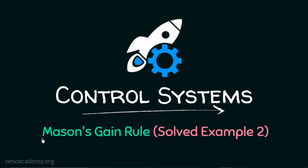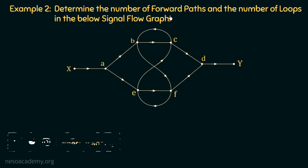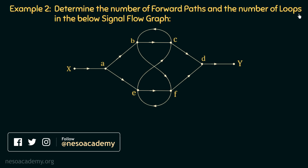In the previous lecture, we discussed one example based on Mason's gain rule. Now in this presentation, we are going to discuss one more example based on Mason's gain rule. The problem is to determine the number of forward paths and the number of loops in the given signal flow graph.